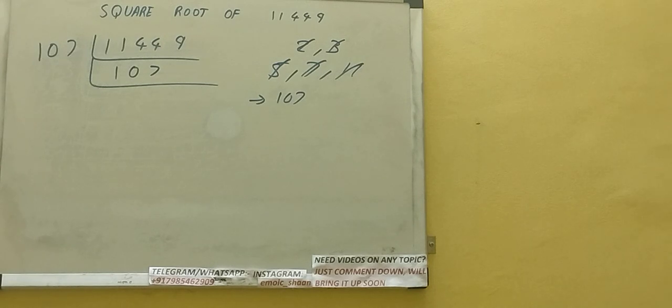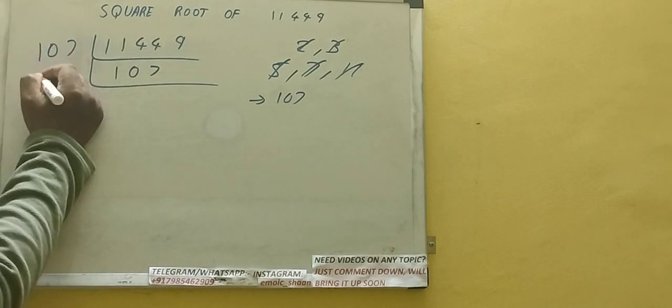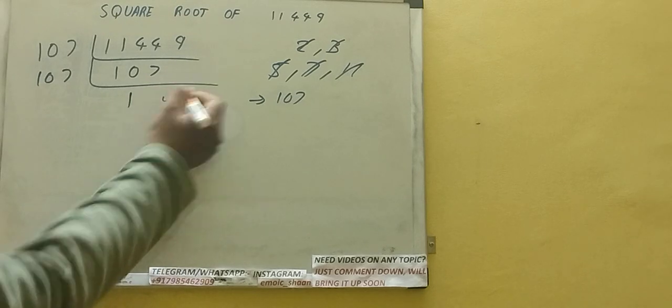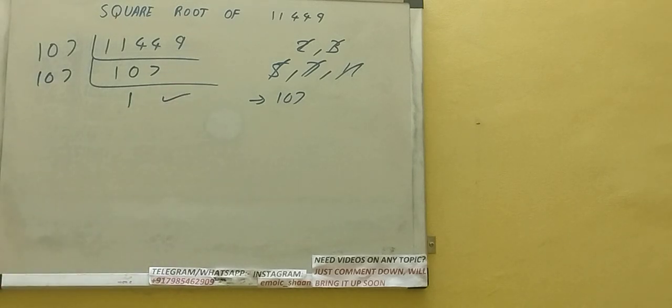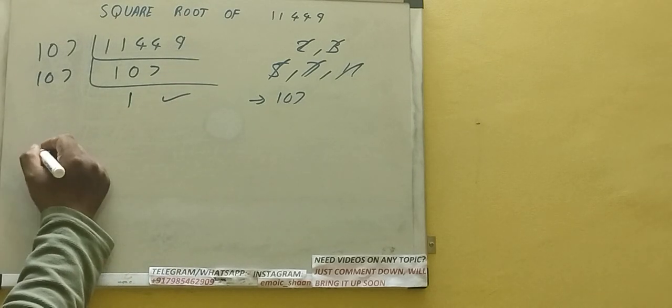Now we'll be getting 107, which is again divisible by 107, and we'll be getting 1. Once we get 1, we need to stop and do one last thing.